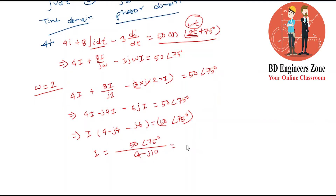At 165 degrees, the calculation gives 4 minus 18. It is not complex — I can divide the amount. The magnitude works out to 1, 6, 4, 2, and the final answer is at least 4.642 at that angle.